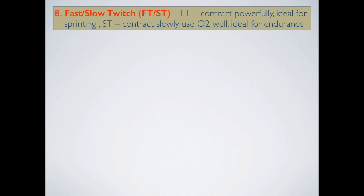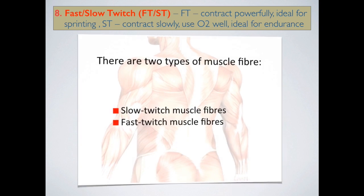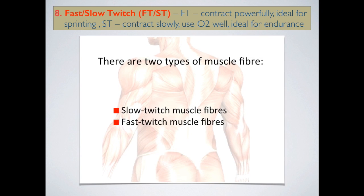In relation to fast and slow twitch muscle fibres: fast twitch muscle fibres are those that contract powerfully and are ideal for sprinting, weightlifting, and other powerful activities. Slow twitch muscle fibres, on the other hand, contract slowly and use oxygen very well for endurance. It's important to know that there are two types of muscle fibre — slow twitch and fast twitch.